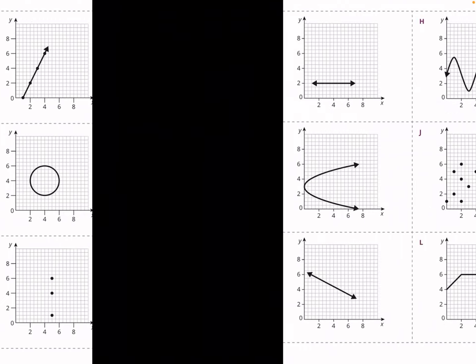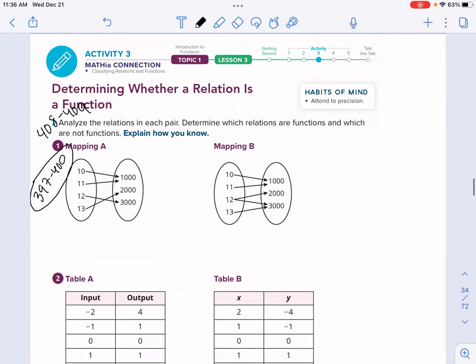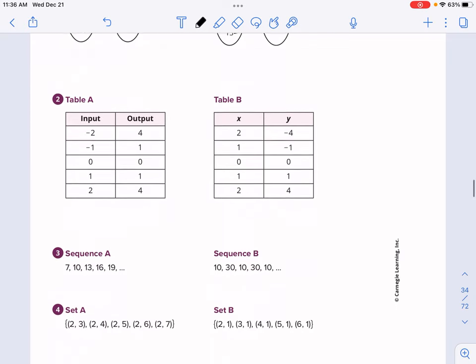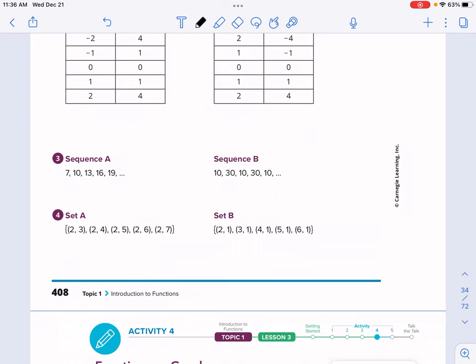We have six cards here, A through F, and then another six, G through L — we'll need that later. For now, we're going to work on determining whether a relation is a function. We have four problems with two parts each. We're going to determine whether mappings, tables, sequences, or sets are functions, and then we'll use those cards for the next activity on page 409.